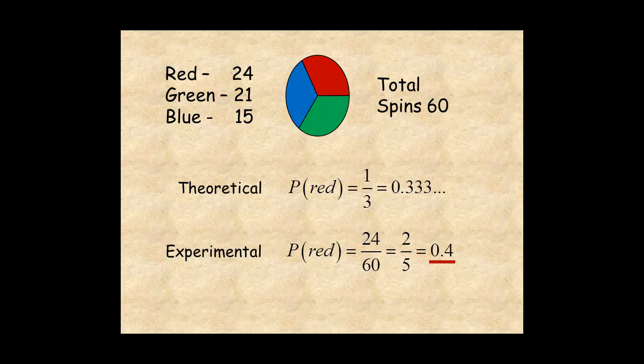Notice the two values are close. The theoretical and experimental probability of an event may or may not be the same. As the number of attempts increases, they should become closer in value.